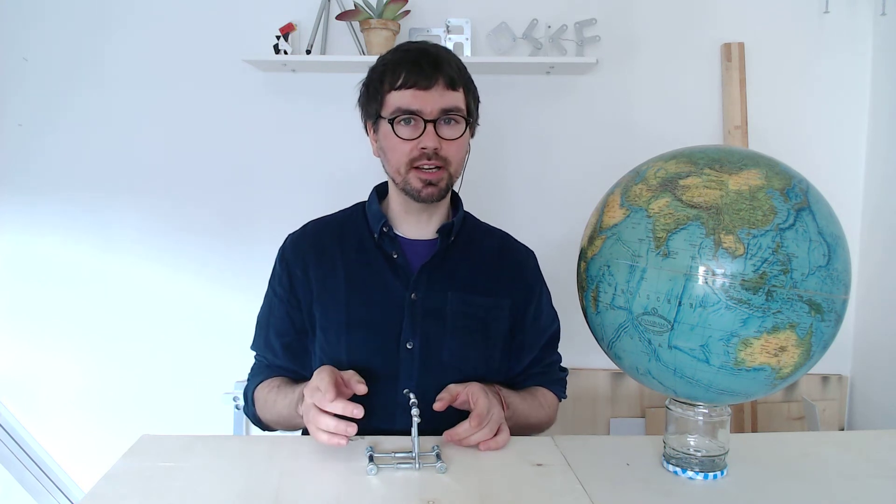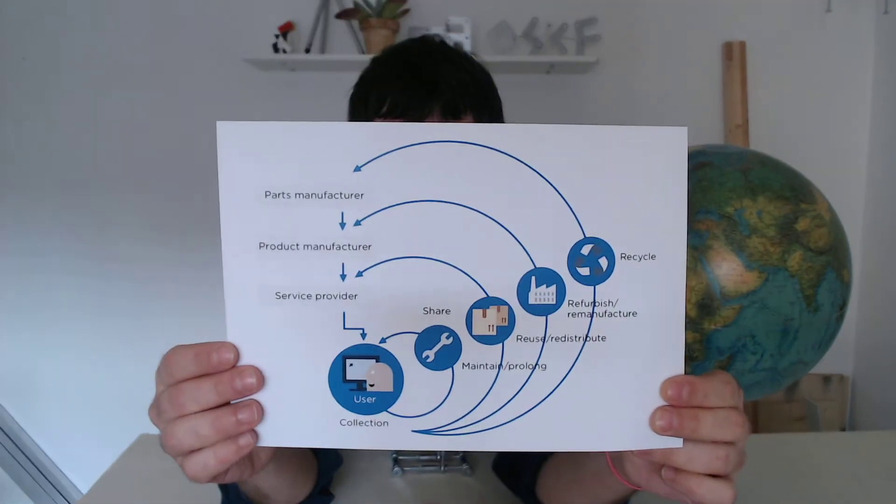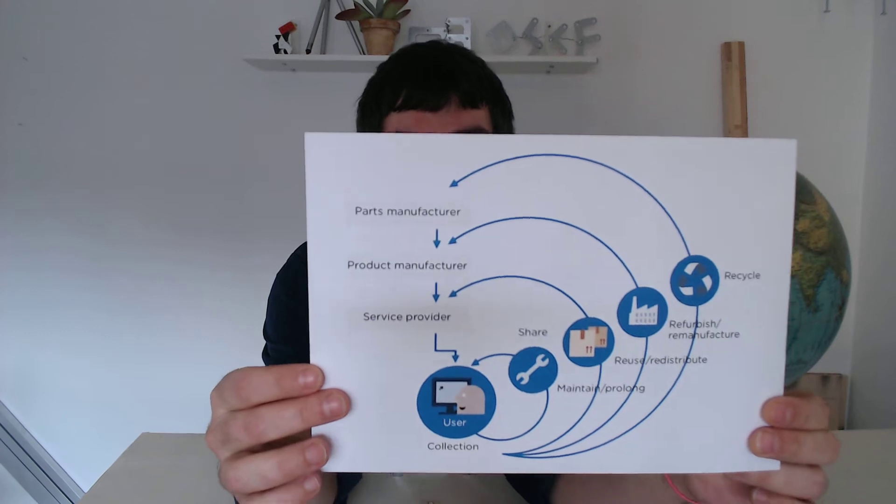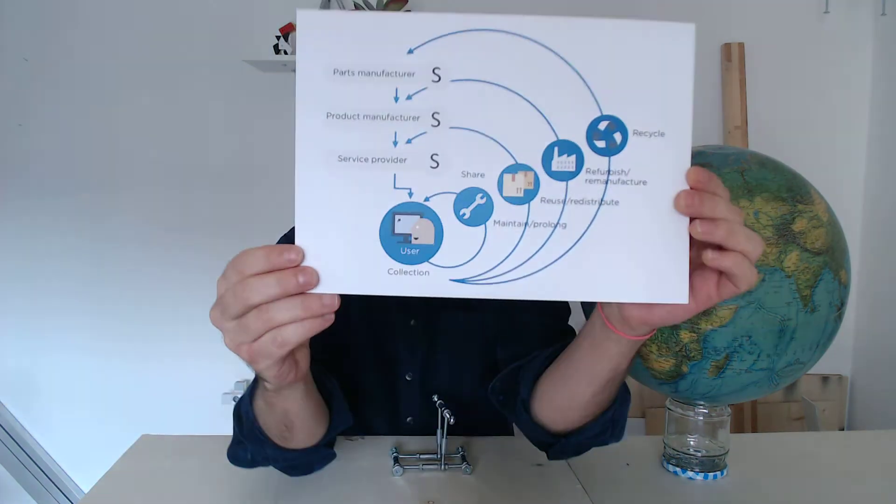It begins with realizing that there is a flaw in the diagram I showed you earlier. Look at the middle part. It talks about a provider and a manufacturer. It is singular. Well, on a complex planet and in a diverse economy it should be of course manufacturers and providers. Plural. So here is a fixed version of the diagram.